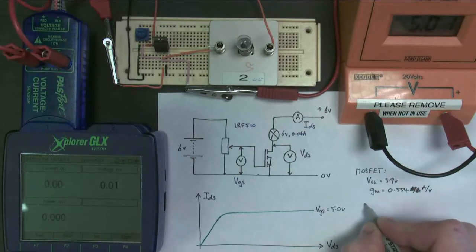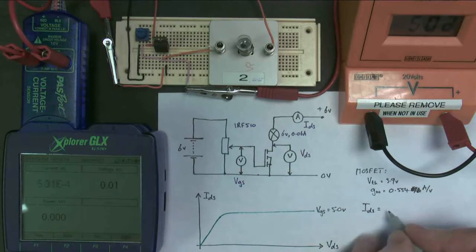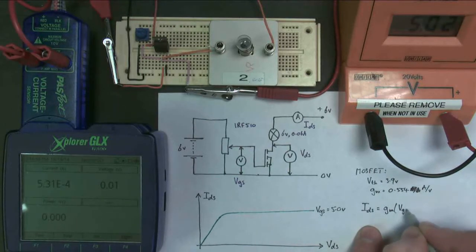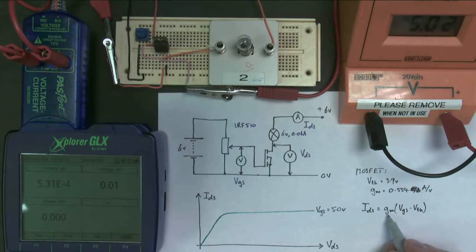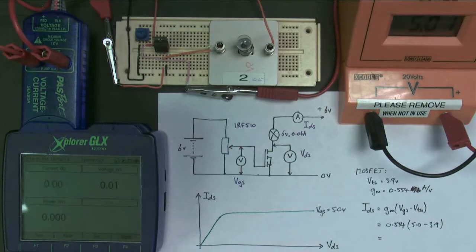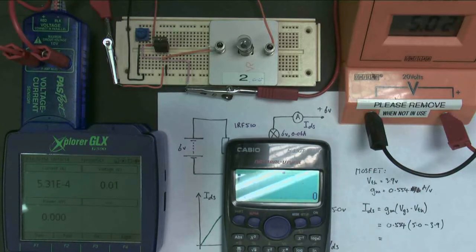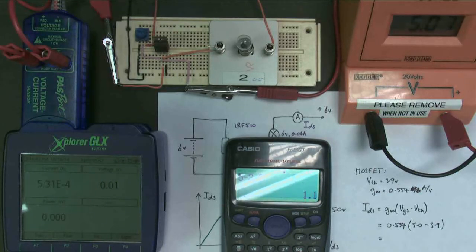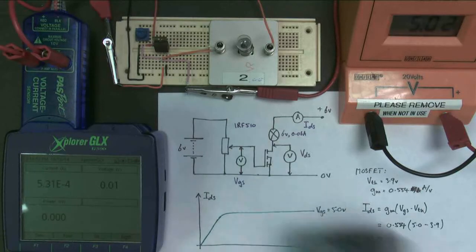So we know from the MOSFET equation from last time that IDS equals GM times VGS minus VTH. So therefore, we should be able to work this value out. Now, for our MOSFET we found last time from experiment, it's 0.554 was the transconductance. My gate source voltage is being set at 5 volts. My threshold voltage was measured to be 3.9. So therefore, my drain source current should be 5 minus 3.9 times by 0.544 equals 0.6. So we'll call it 0.6 amps.